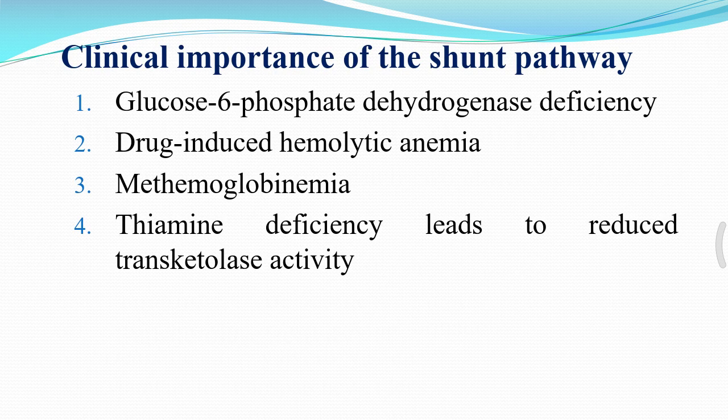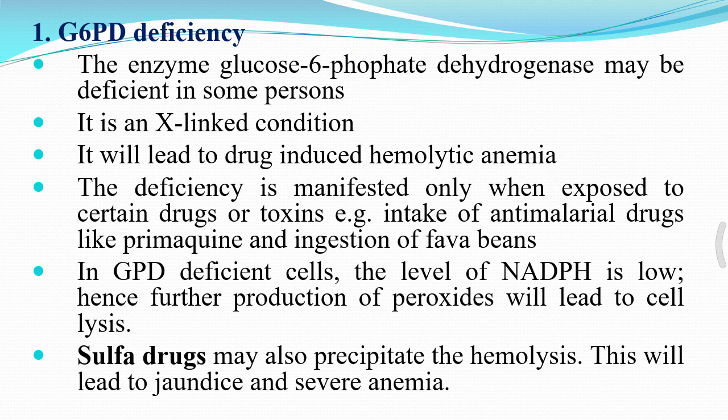The clinical importance of the shunt pathway involves three main conditions: (1) glucose 6-phosphate dehydrogenase (G6PD) deficiency, (2) methemoglobinemia, and (3) thiamine deficiency leading to decreased transketolase activity. G6PD deficiency is an X-linked condition that leads to drug-induced hemolytic anemia. The deficiency is manifested only when exposed to certain drugs or toxins, for example, anti-malarial drugs like primaquine or ingestion of fava beans. Sulfa drugs may also precipitate hemolysis.